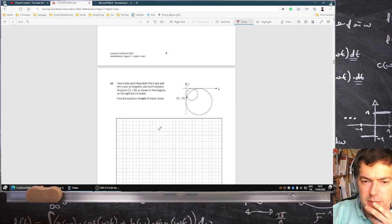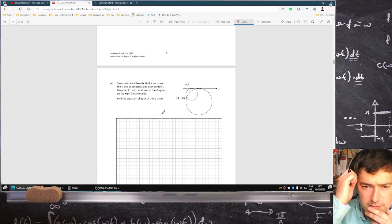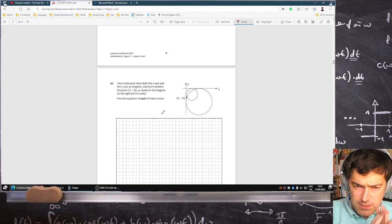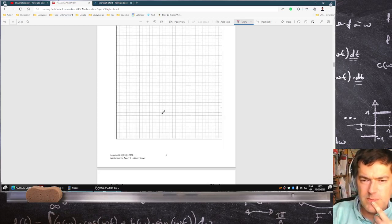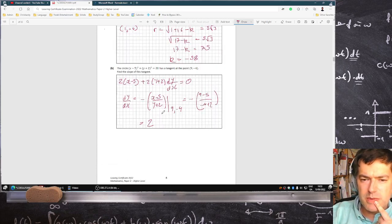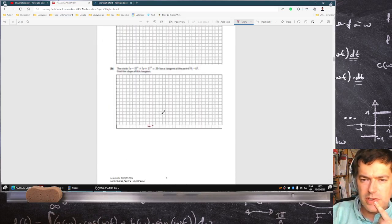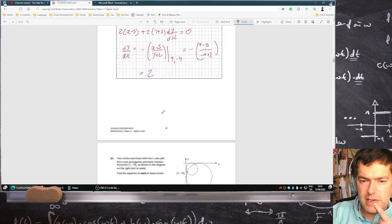Two circles, each both have the x-axis and the y-axis tangents, and each contains the point 1 minus 8, as shown in the diagram. So let's see if I find the equation of each of these circles. That's a bit of an unusual one. Nothing gone beforehand to help me, I think.